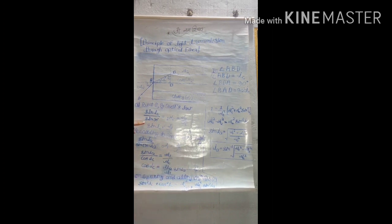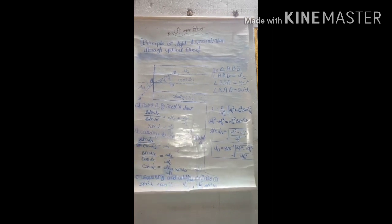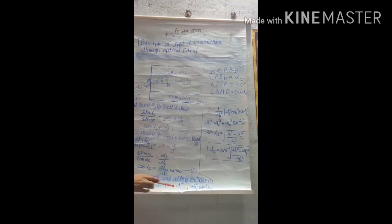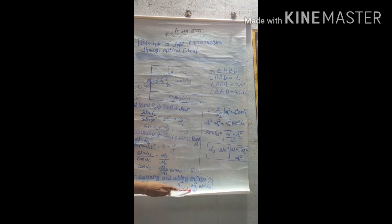Now we have equation number 1 and equation number 2. What we need to do is square both equations and then add them together. So on squaring and adding equation 1 and equation 2, we get sin squared IC plus cos squared IC equals mu2 squared upon mu1 squared plus mu0 squared upon mu1 squared sin squared IA.